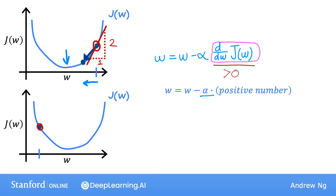Now, the derivative term, remember, is d over dw of J(w). And when we look at the tangent line at this point over here, the slope of this line is the derivative of J at this point. But this tangent line is sloping down and to the right.